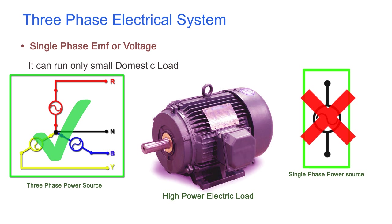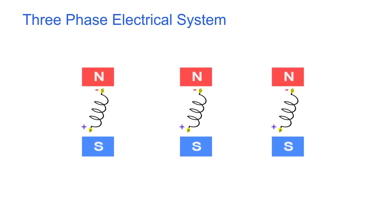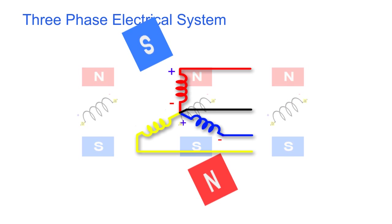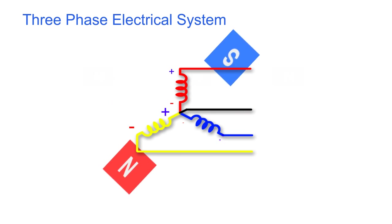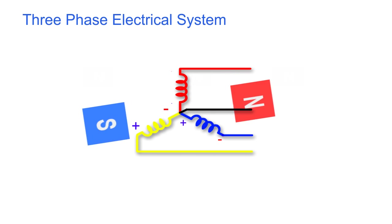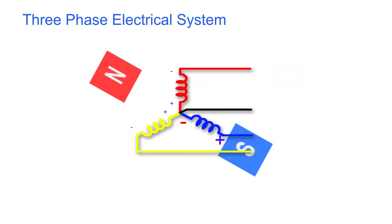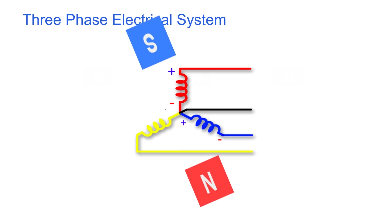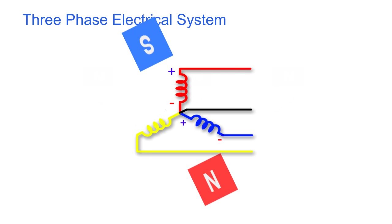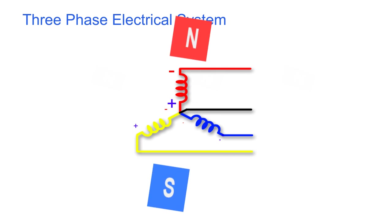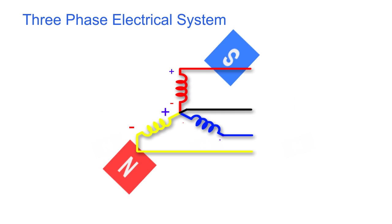So to meet this high current demand, more sets of coils are required and more than two wires are needed. The answer to this requirement is three-phase EMF. Similar to single phase EMF generation, the three-phase EMF can be generated through three sets of coils. Each coil is displaced from one another through 120 degrees.